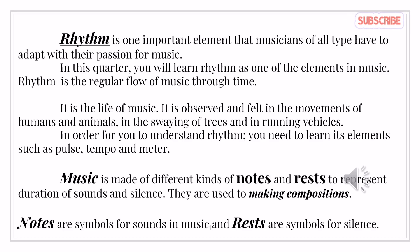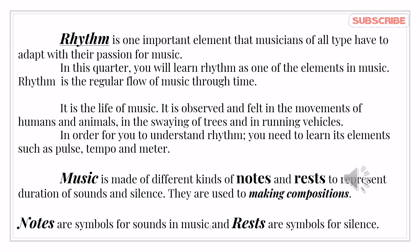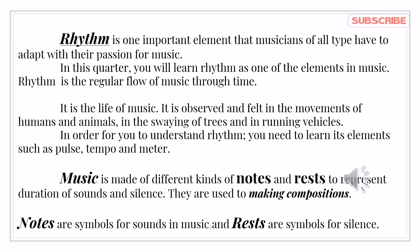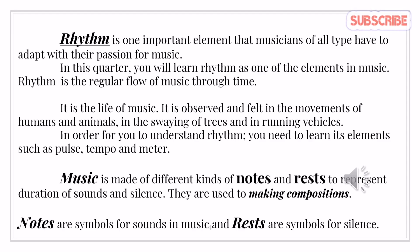Rhythm is the life of music. It is observed and felt in the movements of humans and animals, in the swaying of trees, and in running vehicles. In order for you to understand rhythm, you need to learn its elements such as pulse, tempo, and meter. Music is made of different kinds of notes and rest to represent duration of sounds and silence. Notes are symbols for sounds in music, and rest are symbols for silence.